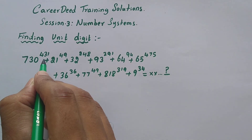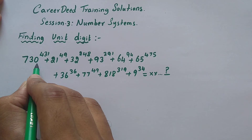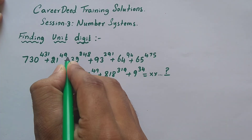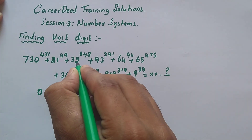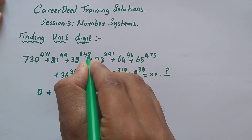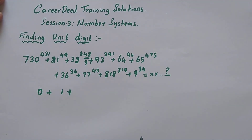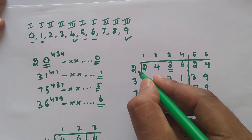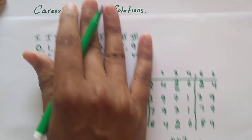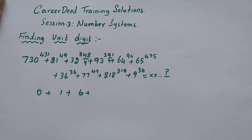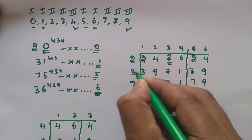Solving the main problem: 730 power 431 — last digit 0 is category 1, so the unit digit is 0. Plus 1 power 49 — category 1, unit digit is 1. For 32 power 248, last digit is 2 with cyclicity 4: divide 48 by 4, remainder 0, so look at 2 power 4 — unit digit is 6. For 93 power 291, last digit is 3 with cyclicity 4: divide 91 by 4, remainder 3, so look at 3 power 3 — unit digit is 7.